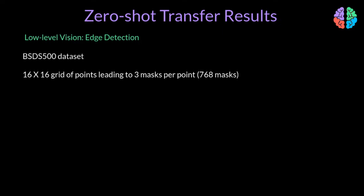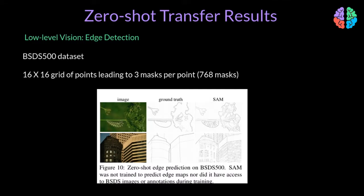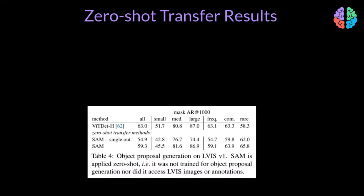When it comes to the low-level vision task of edge detection, they compare SAM's performance on the BSDS500 dataset, which is a standard benchmark for edge detection. The evaluation used 16 by 16 grid points as inputs, leading to 768 masks per image. The results indicate that the SAM model does not always understand which edges to suppress and which to keep, mainly because it is a general-purpose foundational model not biased by the dataset. Nevertheless, it seems to perform edge detection reasonably well as shown in the paper's figures.